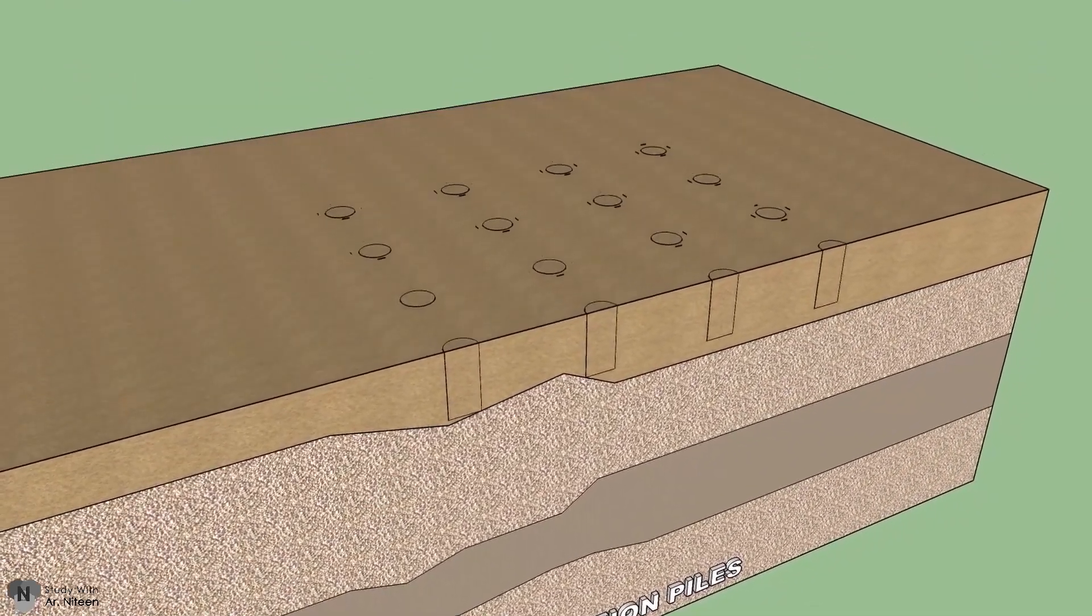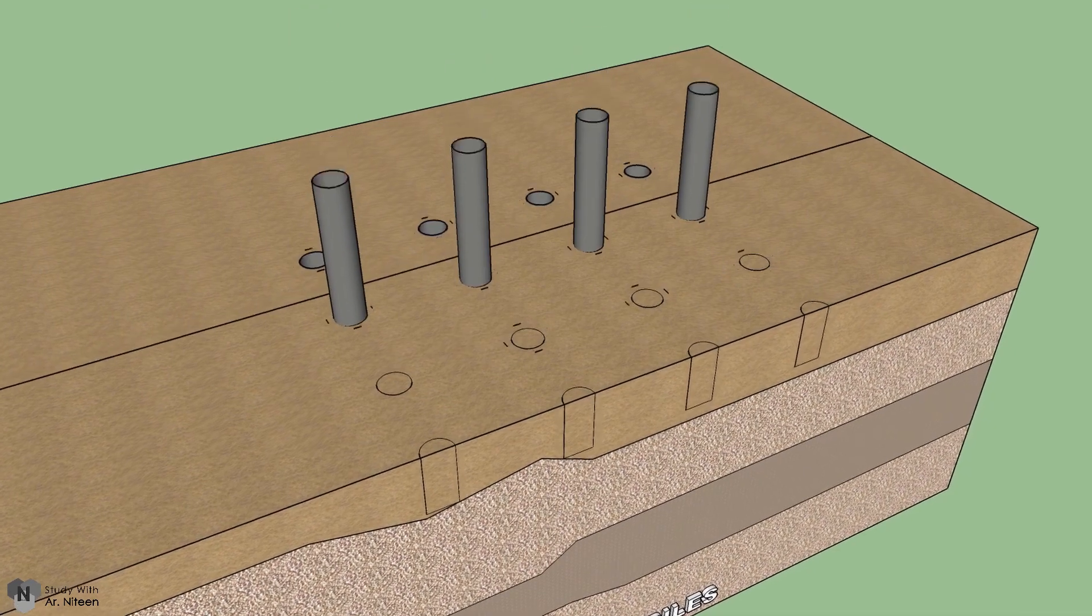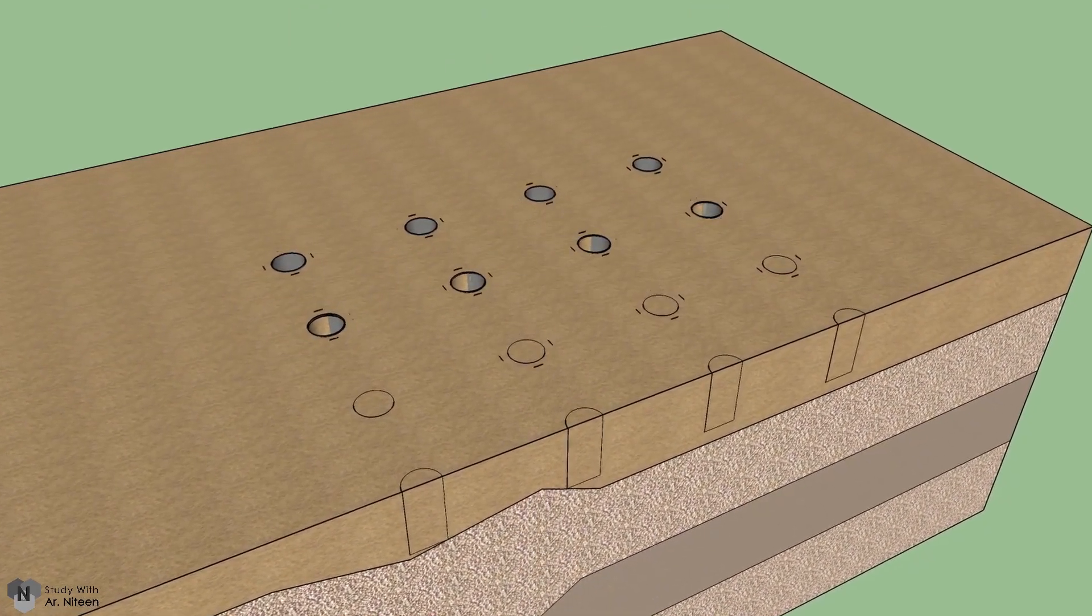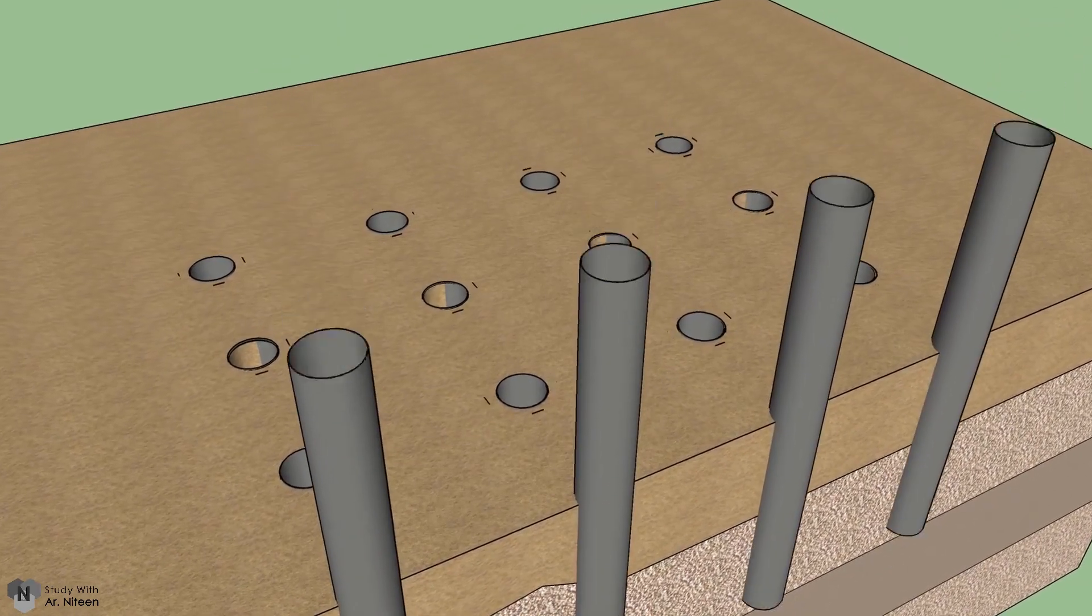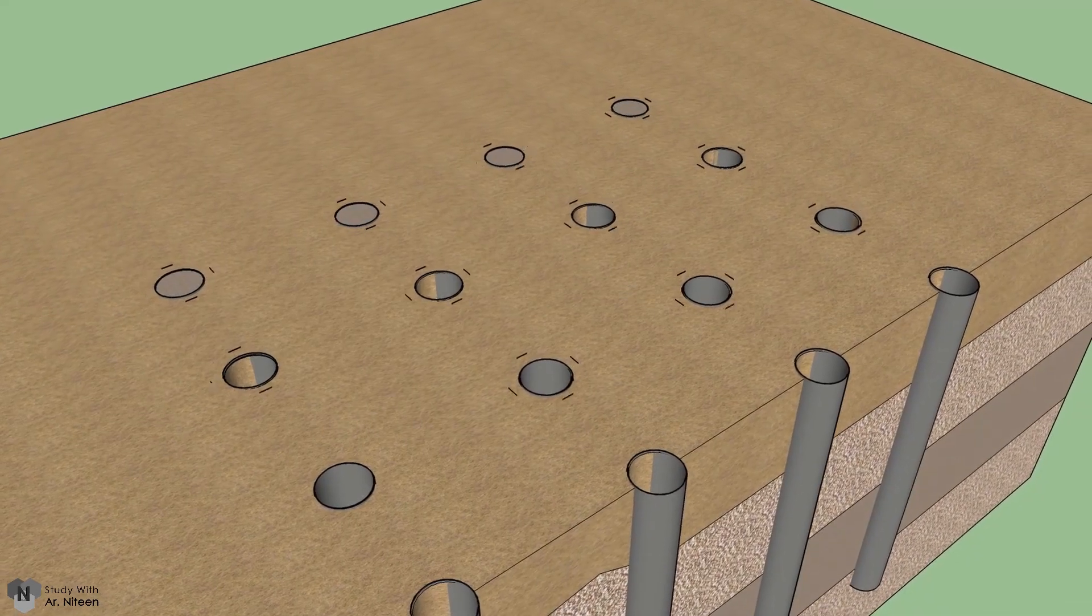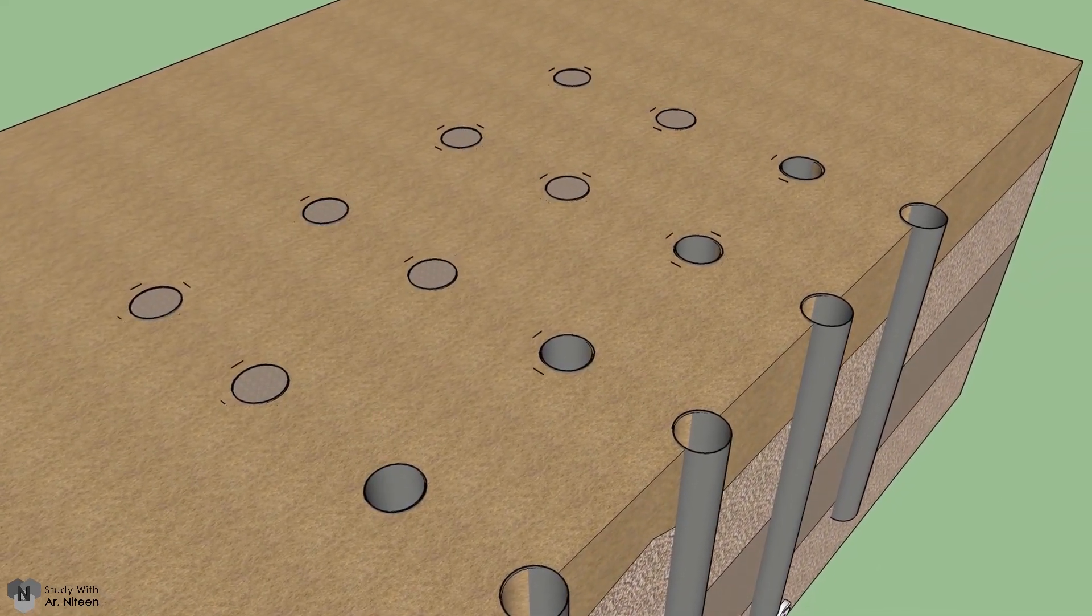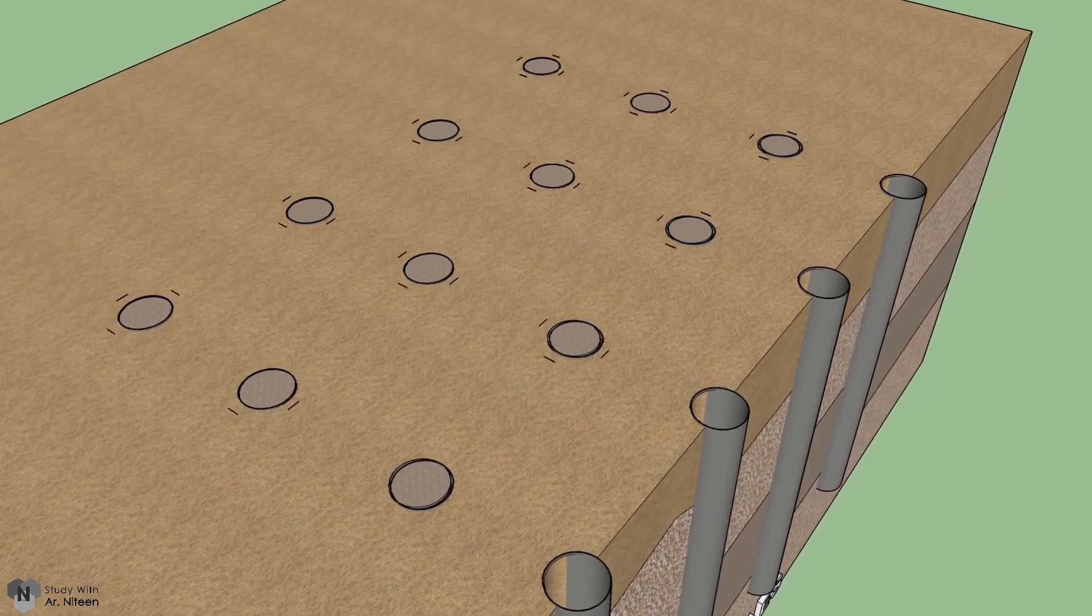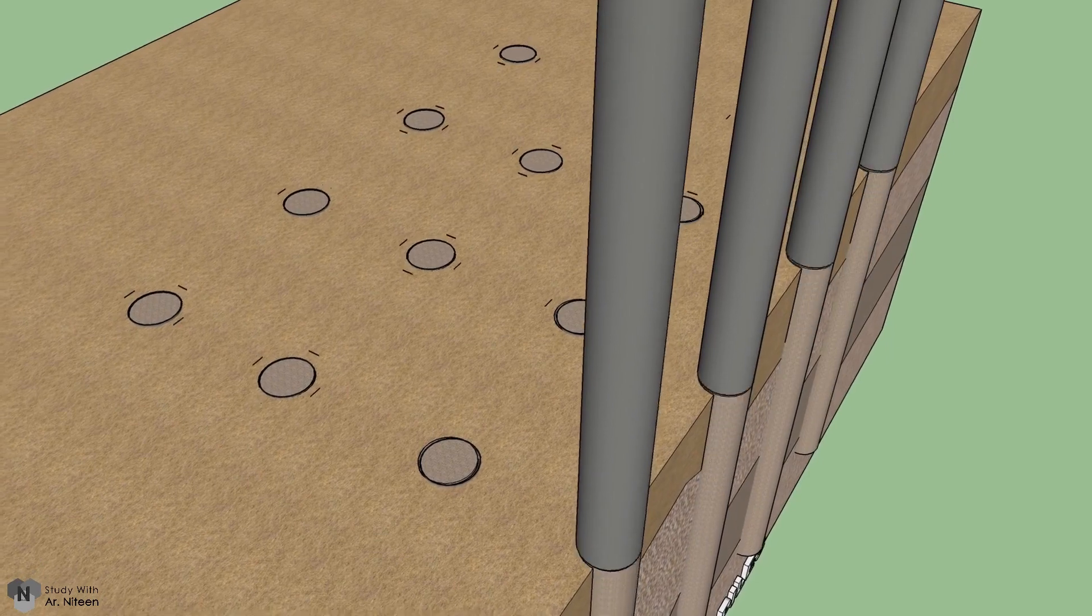Compaction piles, also called sand piles, are used to improve the bearing capacity of the soil. Casing is driven in the soft soil, which displaces the surrounding soil. The casing is then filled with external soil and the casing is removed. The piles promote neighboring soil compacting, thus improving the bearing capacity and decreasing the foundation settlement.